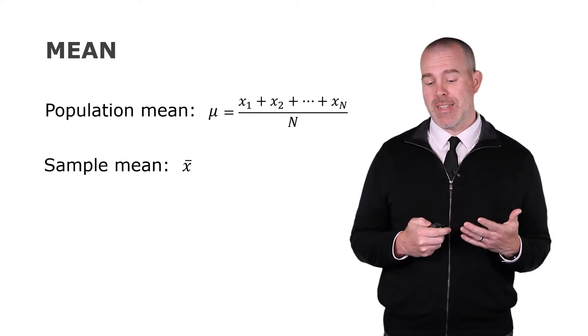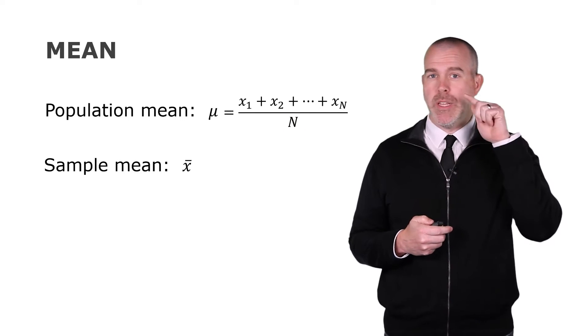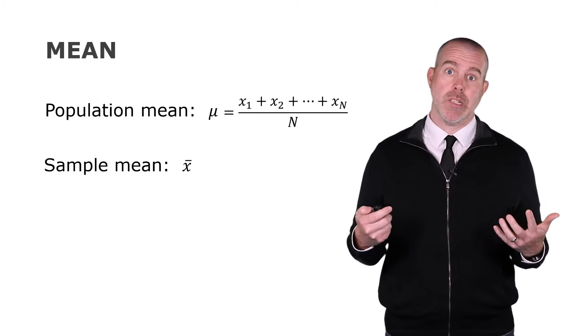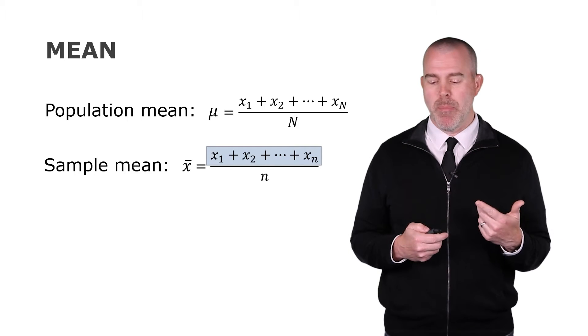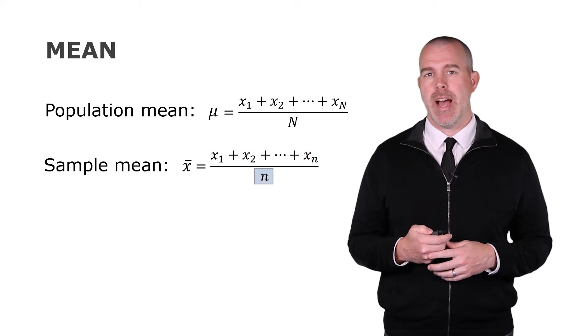That's this subscript x sub 1, x sub 2. You add up all the observations. You divide by how many there are. For the sample mean, we're going to use x with a little bar, and we just call it x bar. X bar, same thing, add them all up, divide by the sample size.